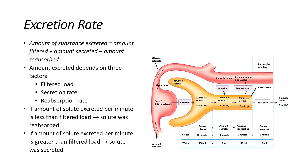When we speak about the excretion rate, this is basically the amount of the substance that is leaving the body, that is being removed in the urine. This is equal to how much of that substance is being filtered, plus how much is being secreted, minus how much is being reabsorbed.